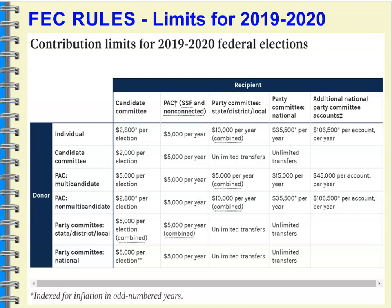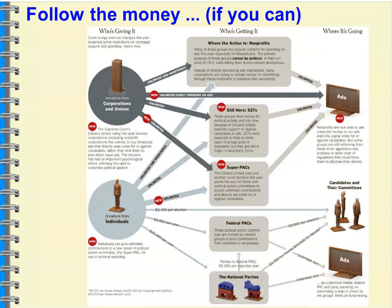In terms of contribution limits, the key number is $2,800 per election — that is what an individual can donate directly to a candidate's committee. PACs can give $5,000. The $2,800 is adjusted for inflation and is considered hard money. These donations are traceable and trackable — reported to the Federal Election Commission and the IRS. You can follow the money for hard money contributions.